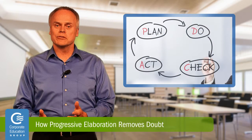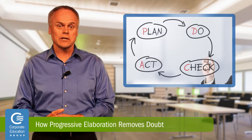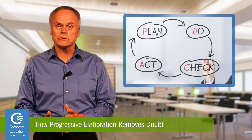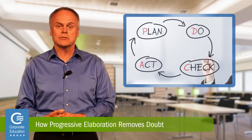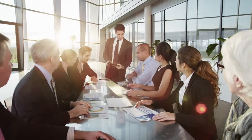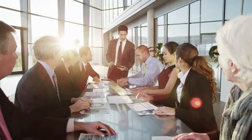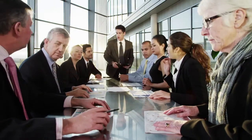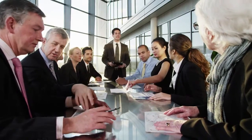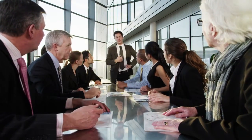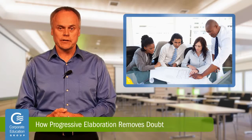Using a progressive elaboration approach with iterative or incremental requirements development can greatly reduce this uncertainty for your stakeholders and relieve you of the added stress of those numerous revisions. When using progressive elaboration, elicit information, formalize or document this information, and then review in small increments based on topics or functions, instead of the entire project area.